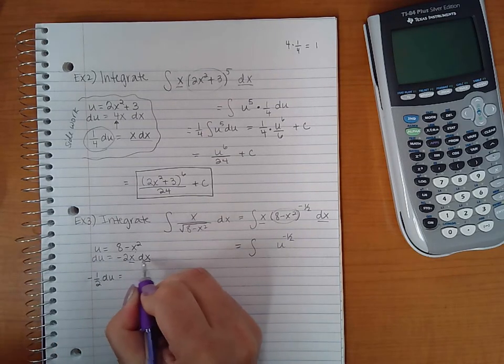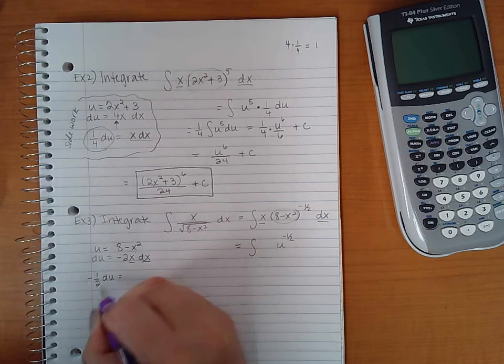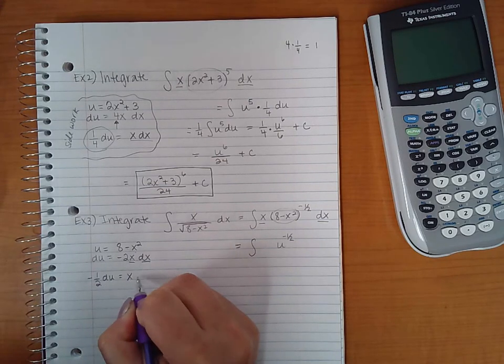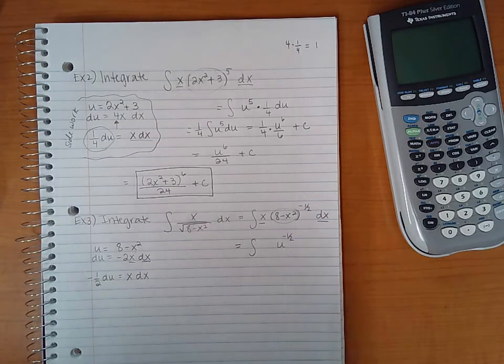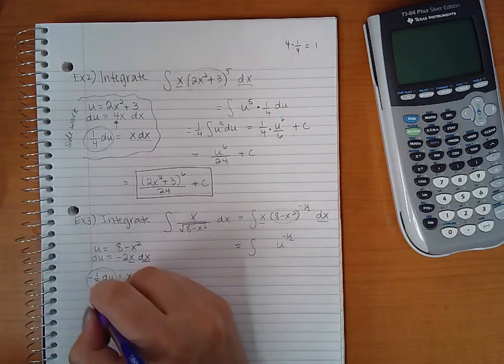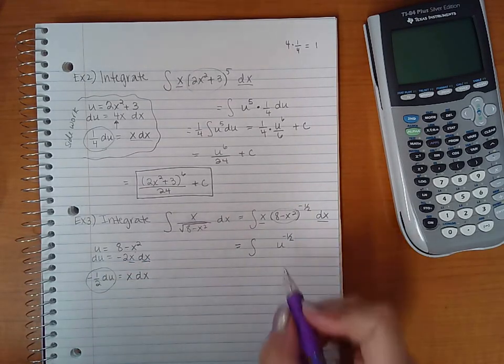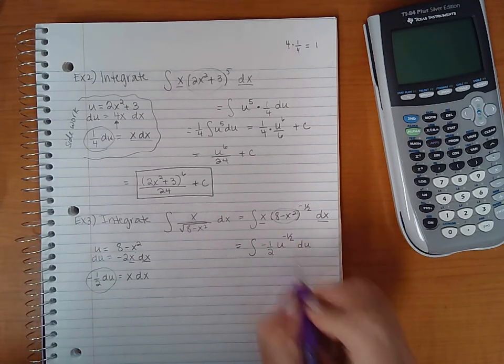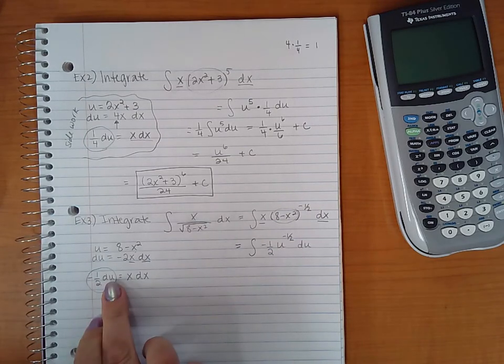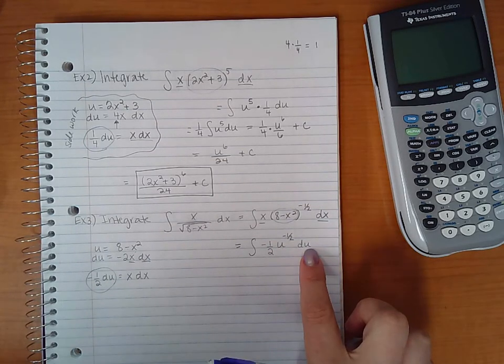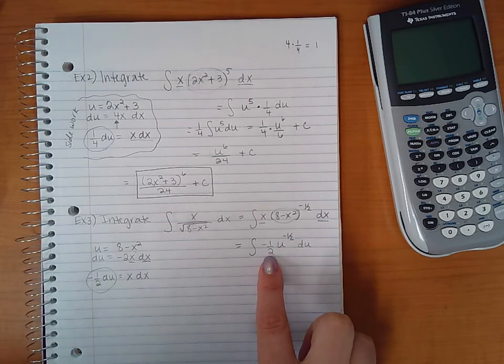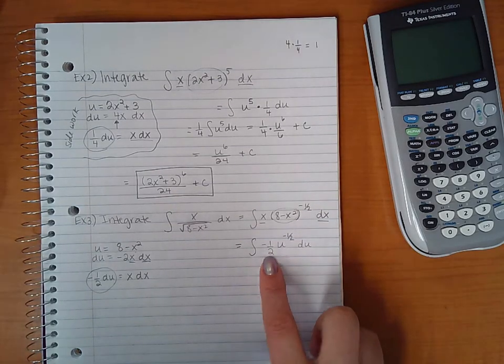And if I multiply this side by negative 1 half, the negatives will make a positive and the twos will reduce, just giving me 1x dx. Now I know what to substitute for the x and the dx. I'm going to substitute du and a negative 1 half multiplier. Now, when you're multiplying, it doesn't matter what order they get multiplied, which is why I chose to put the du here and the negative 1 half here in the front.